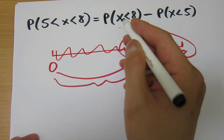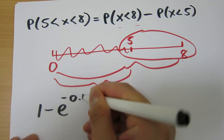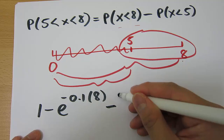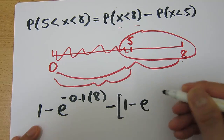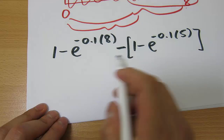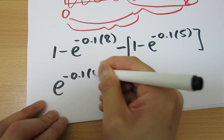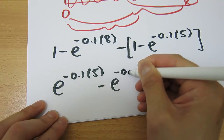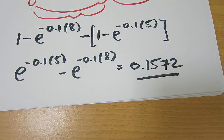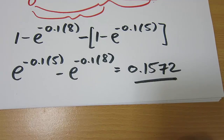So the calculation is: (1 minus e to the power of negative 0.1 times 8) minus (1 minus e to the power of negative 0.1 times 5). Simplifying, the 1s cancel out, giving e to the power of negative 0.1 times 5 minus e to the power of negative 0.1 times 8. The answer is 0.1572, so there is a 15.72% chance that a checkout takes between 5 and 8 minutes.